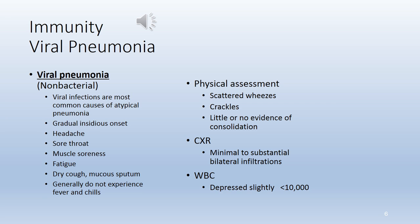Viral pneumonias are the most common causes of atypical pneumonia due to viral infection. They have a gradual, insidious onset. Patients may manifest with headaches, sore throats, muscle soreness, fatigue, dry cough, and mucus sputum. They do not always experience fever and chills. On physical assessment, you can hear scattered wheezes and crackles, and there may be little or no evidence of consolidation. Chest x-ray may show minimal to substantial bilateral infiltrates. Lab work shows white blood cell counts slightly depressed, less than 10,000.